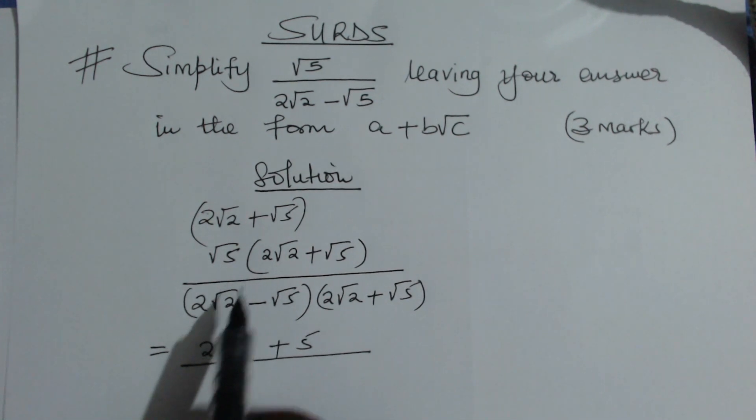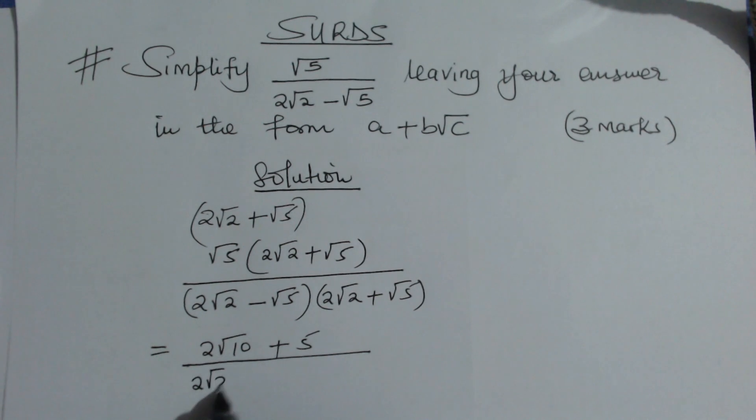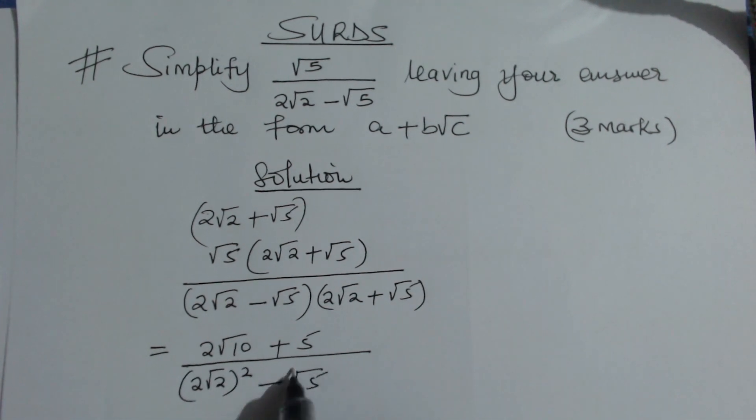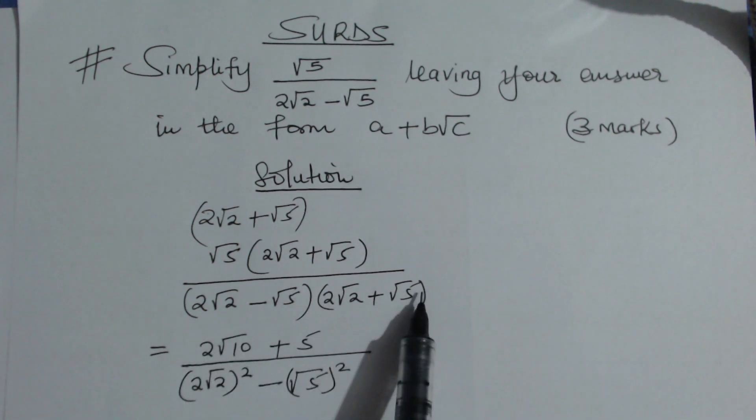Now for the denominator, I'd like you to notice one thing here - this is a difference of two squares and this will simplify to (2√2)² - (√5)². How do I arrive at this? You can expand it the long way and still get the solution, but I've used this knowledge on difference of two squares.